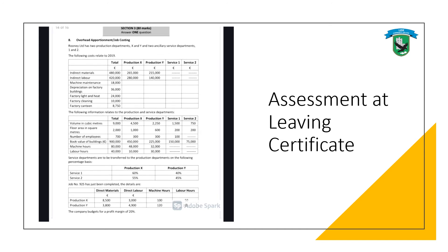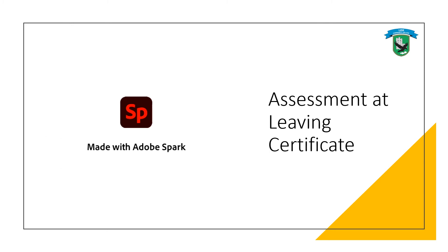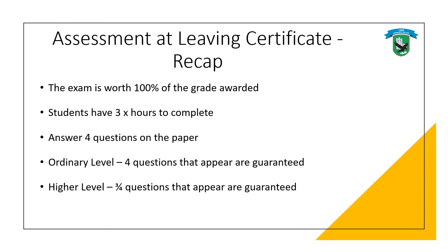That means three out of four questions are guaranteed on the paper. To recap: the exam is worth 100% of your grade, students have three hours to complete it, and must answer four questions — the same for both higher and ordinary level. At ordinary level, all four questions are effectively guaranteed. At higher level, three out of four topics are guaranteed, though questions may change slightly year to year by asking different aspects of a topic. It's just about making sure we're prepared in advance.